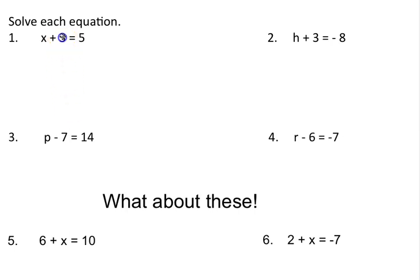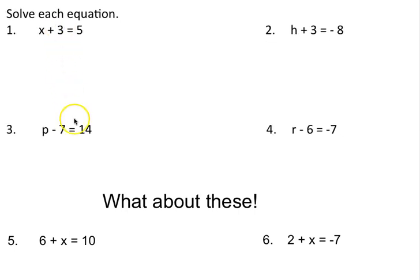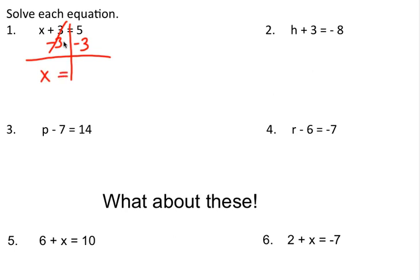It says solve each equation. I have an equal sign, therefore I know it's an equation. So here I have x — I'm going to ask myself, what are they doing to the variable? They are adding a 3, so the opposite or the inverse will be subtracting a 3. So I'm going to subtract a 3 here. You can draw your wall for the equation sign because they're on opposite sides. What I do to one side, I'm going to do to the other side. 3 minus 3 goes to 0 so it cancels out, and I'm left with x on the left side. I bring down my equal sign and then 5 take away 3 which is 2.